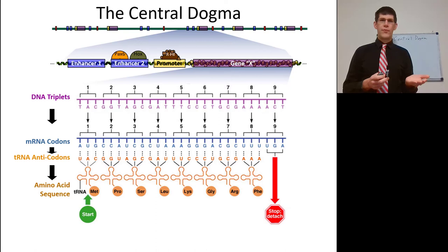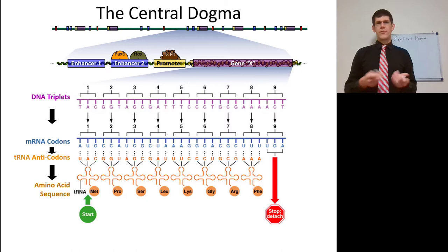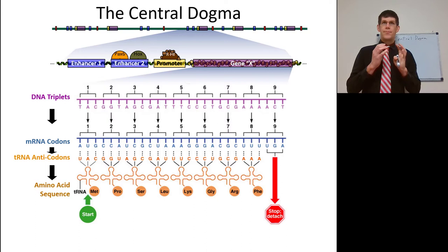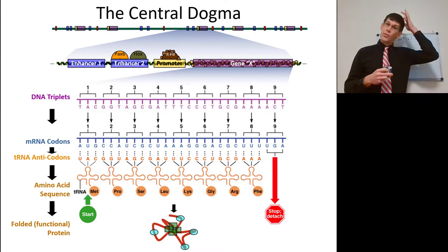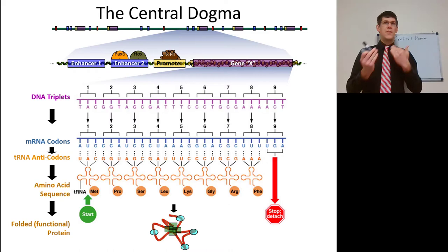Those mRNA codons are going to be matched by certain tRNA anticodons — hopefully this sounds familiar from Bio 141. The tRNA is a subsection of RNA attached to an amino acid. The ribosome takes these amino acids and joins them together as it reads the mRNA to make a protein, which is folded into a functional protein, which then has a certain phenotype. Gene to phenotype.